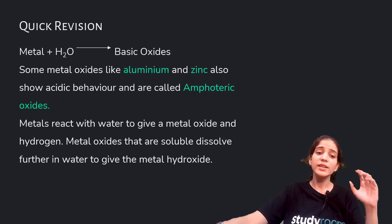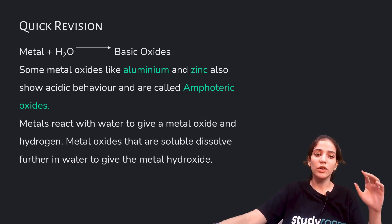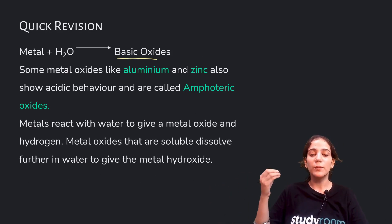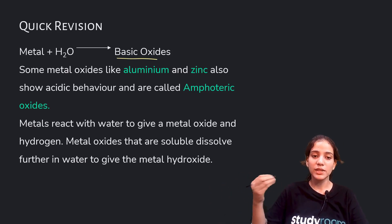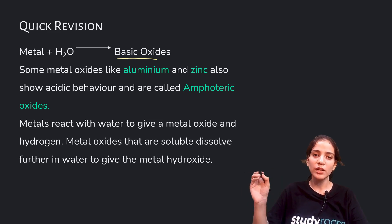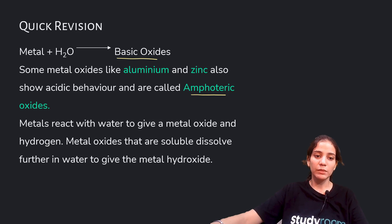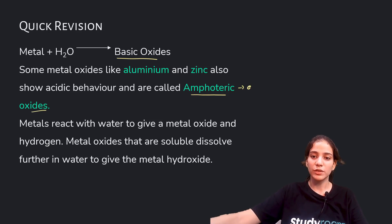Whereas metals, when dissolved in water, produce basic oxides. But some metal oxides like aluminum and zinc also show acidic behavior, and therefore they are called amphoteric oxides — that means showing dual behavior.